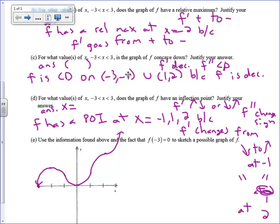I know I did that rather quickly, but all of that information is up here. Let's make sure we've got the appropriate information. At negative 2, do we have a relative maximum? Yes. Are we concave down from negative 3 to negative 1? Yes. Are we concave down from 1 to 2? Yes. Do we have a point of inflection at negative 1, 1, and 2? So this is a graph that collects all of that information together.